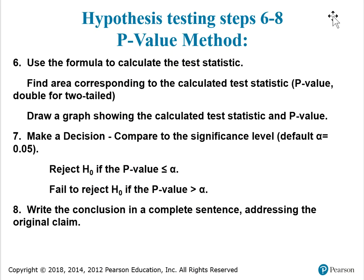Hypothesis testing steps 6 through 8, P-value method. Step 6: use the formula to calculate the test statistic. Find the area corresponding to the calculated test statistic — the P-value. You've got to double it if it's a two-tailed test. Draw a graph showing the calculated test statistic and the P-value. Step 7: make a decision — compare to the significance level. The default is alpha as 0.05. You reject H-sub-0 if the P-value is less than or equal to alpha. You fail to reject H-sub-0, the null hypothesis, if the P-value is greater than alpha. Then step 8 is to write the conclusion in a complete sentence addressing the original claim.